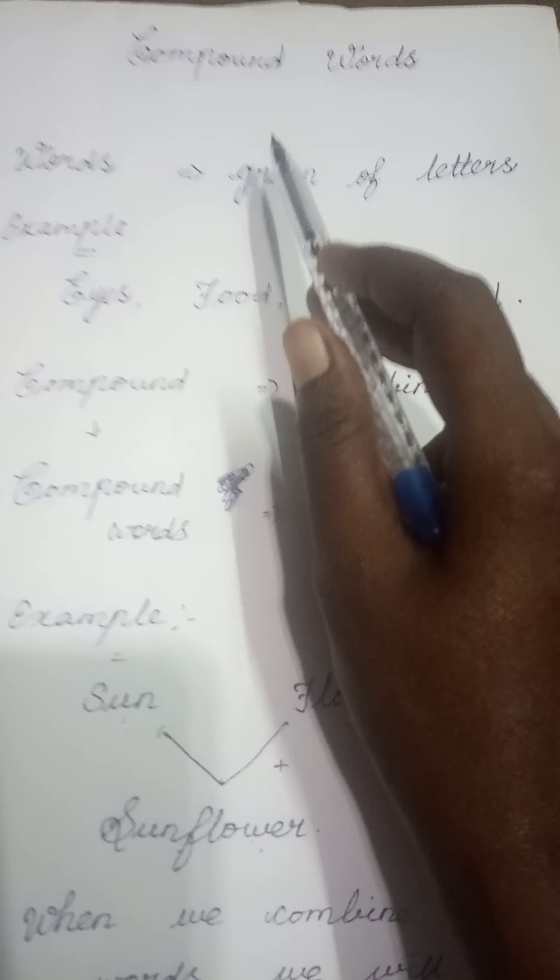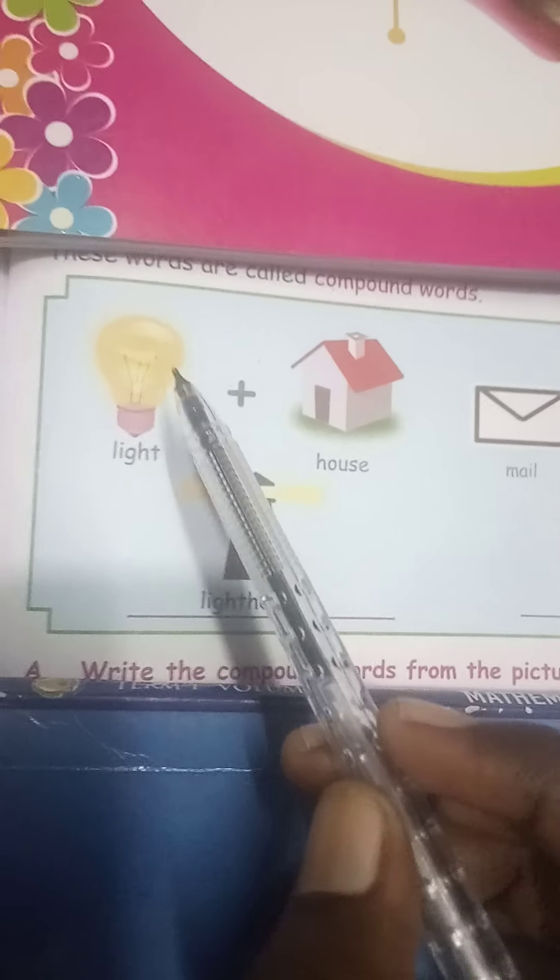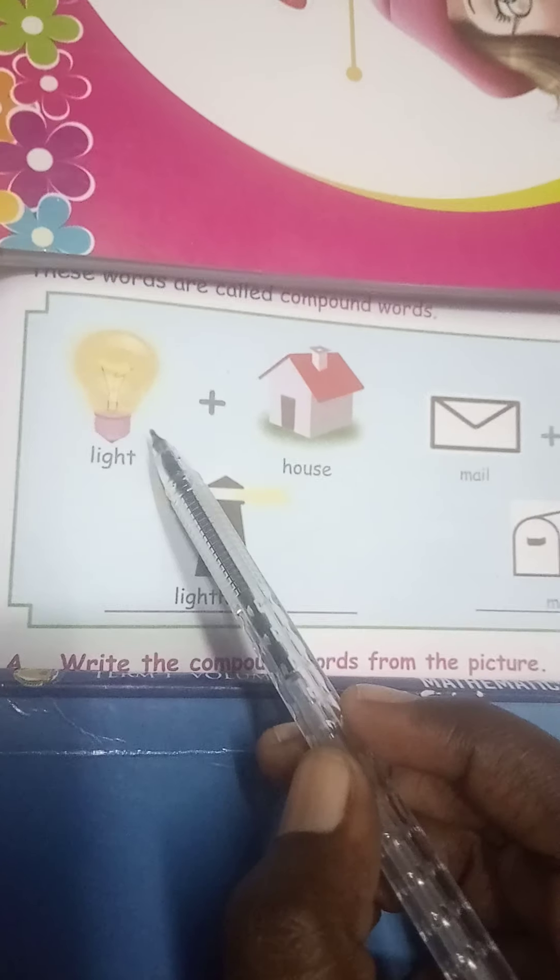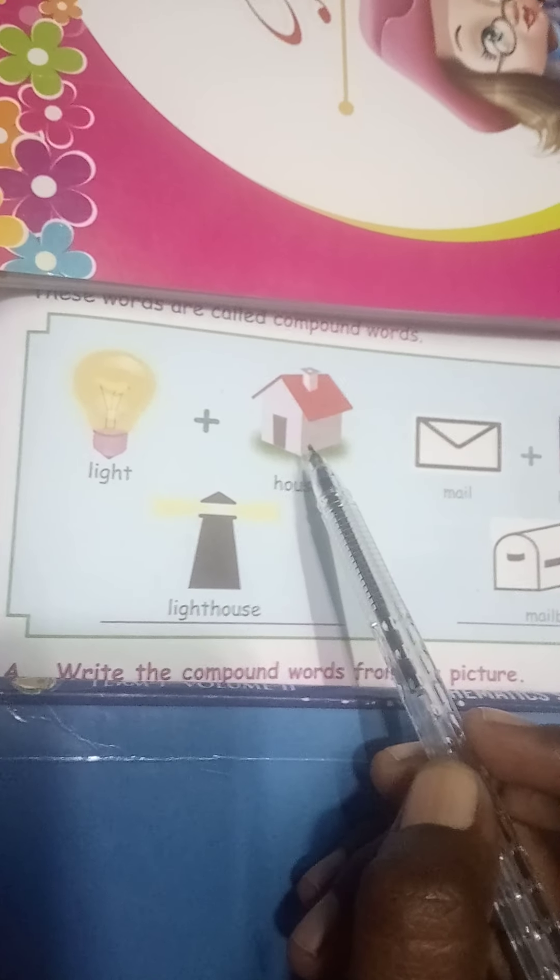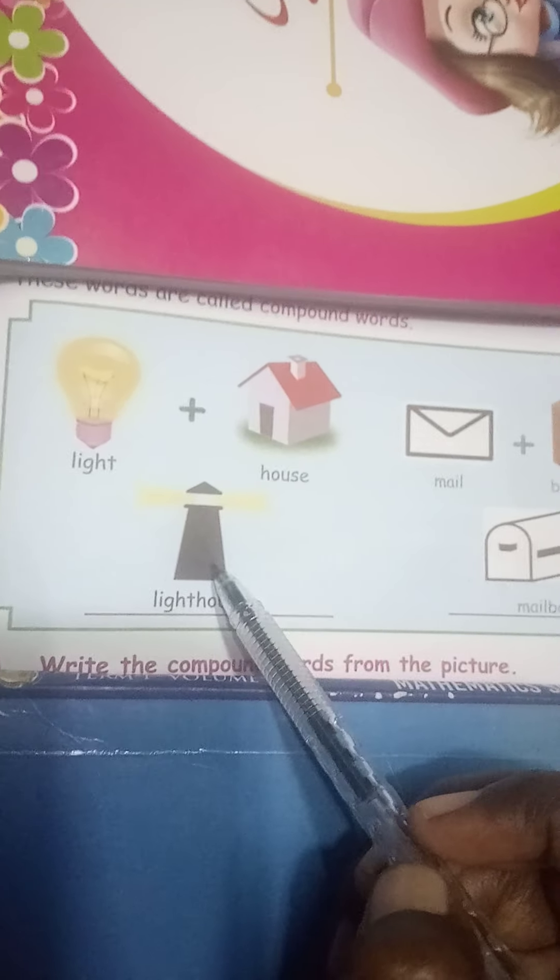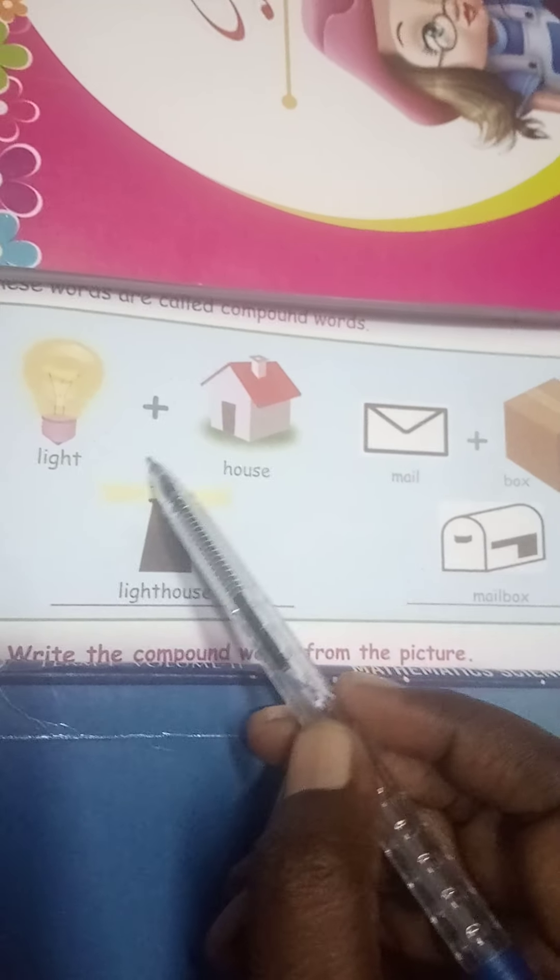Then, I will give you another example. You see this example. What is this? Light. This is house. Light is a single word with some meaning. And house is a single word with one meaning. But, if we combine these two words, we will get lighthouse. A different meaning.